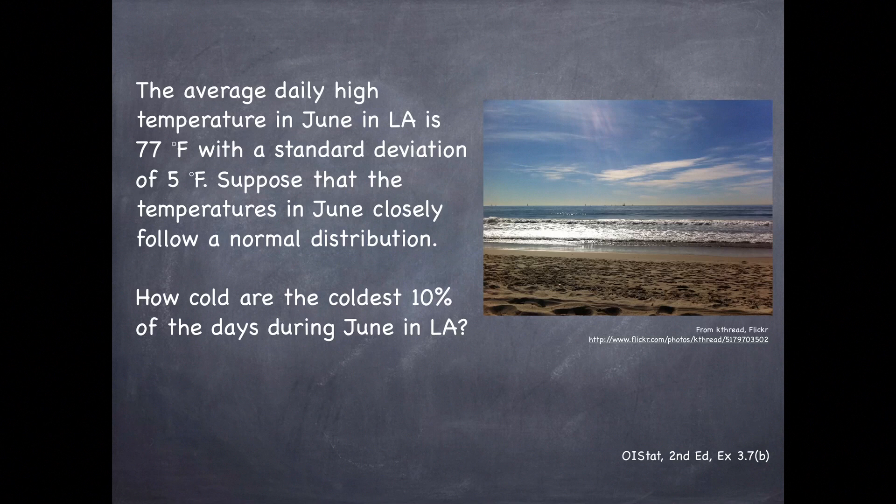The average daily high temperature in June in LA is 77 degrees Fahrenheit with a standard deviation of 5 degrees Fahrenheit. Suppose that the temperatures in June closely follow a normal distribution. How cold are the coldest 10 percent of the days during June in LA?